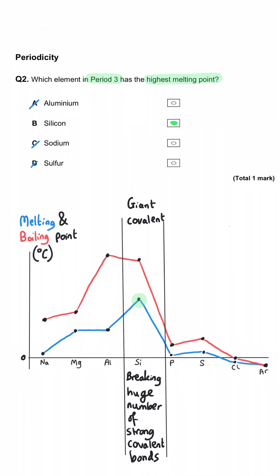And so that is higher than sodium, magnesium, and aluminium. They have metallic bonding, which is strong electrostatic attractions, but not as strong and not as many as the strong covalent bonds in silicon.